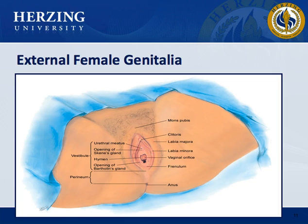For the female genitourinary system, the external female genitalia, or vulva, include the mons pubis, labia majora and minora, clitoris, urethral meatus, paraurethral or Skene's glands, vaginal orifice, hymen, and vestibular or Bartholin's glands. The vestibule is the boat-shaped space between the labia into which the urethra and vagina open.